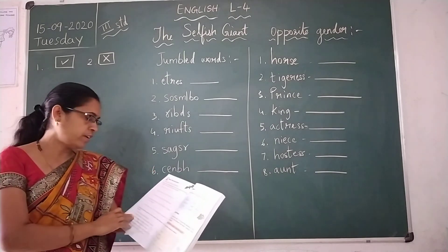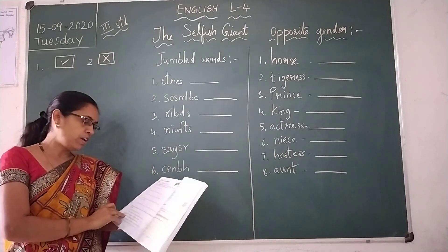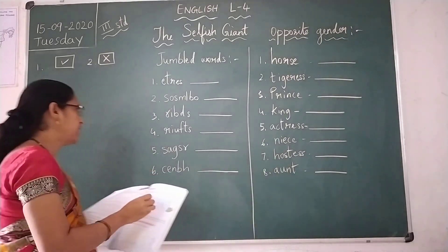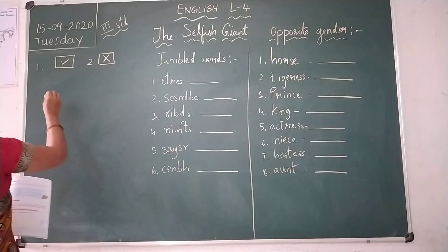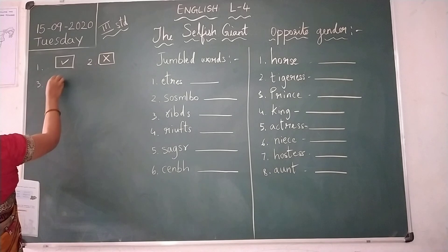Third one: The children were spoiling Jane's beautiful garden. That is also wrong.